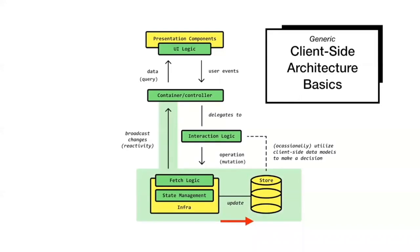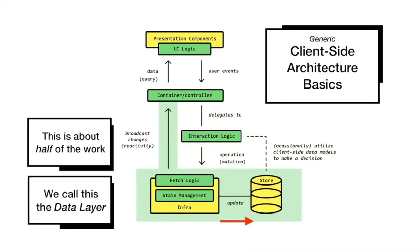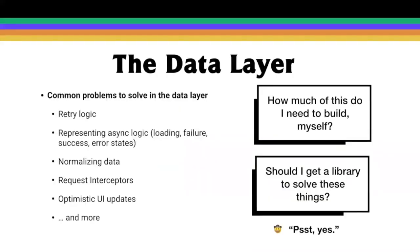If you look at this, you'll see that this accounts for around half the work — we can see that visually. At Apollo, we gave a name to this stuff: we call it the data layer.